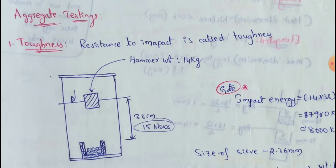The strength of the pavement depends upon the strength of aggregate. Road pavement strength depends upon the strength of aggregate. We need to test the aggregate properties: strength, toughness, hardness, and soundness.